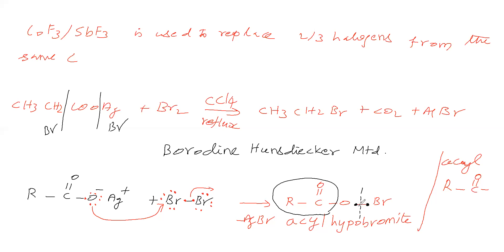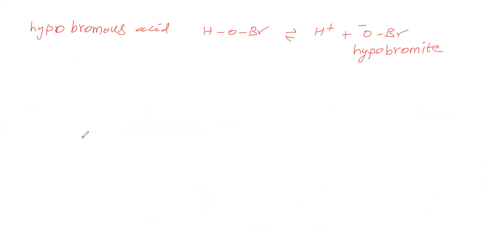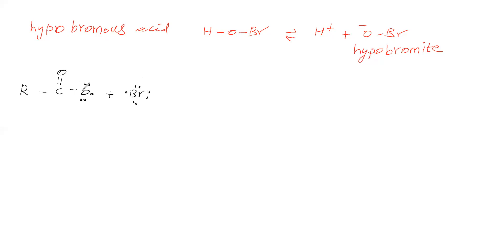Homolytic cleavage means the two electrons in the bond split — one electron goes right, one goes left. After dissociation, we get the carboxylate free radical RC(=O)O• and Br•. The Bromine valence shell has seven electrons — an odd number — so it is a free radical. The oxygen side also ends up with seven electrons total, so it too is a free radical, called the Carboxylic free radical.